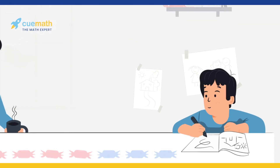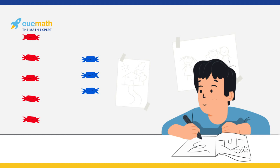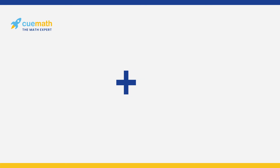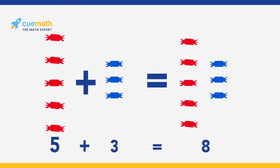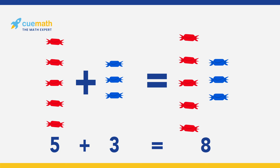Thus, when we group the two candies together, we get eight candies. This is how we add numbers. We use the plus sign to add any two numbers. Five plus three equals eight.